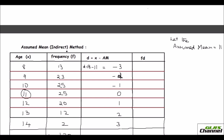Next, multiply the frequency and the deviation — not the x value — to get the fd column. After finding the deviation, the x column has nothing to do with the problem. So: 13 times negative 3 is negative 39; the next is negative 46; then negative 25; 0 times 25 is 0; then 20; then 24; and the last one is 6.